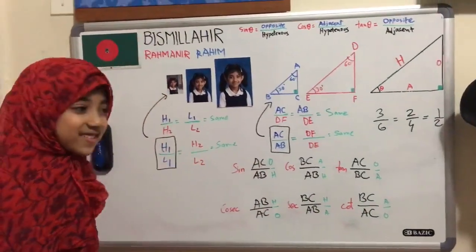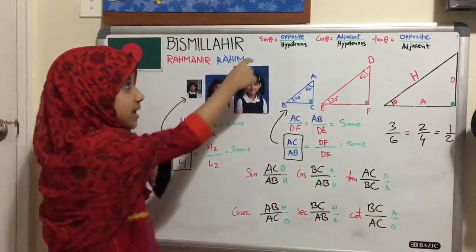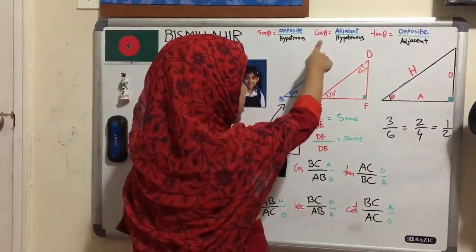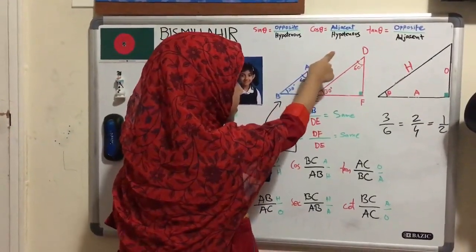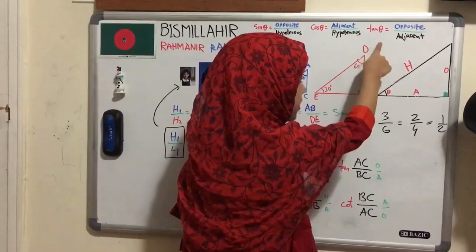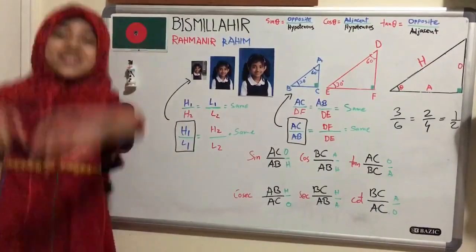So now what we learned. We learned why sine theta equals to opposite by hypotenuse. We also learned that why cos theta equals to adjacent by hypotenuse. And we also learned that tan theta equals to opposite by adjacent. Thanks for watching. Bye bye.